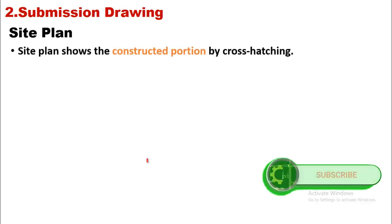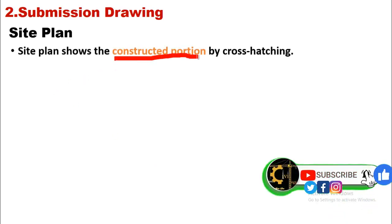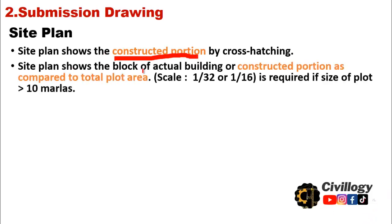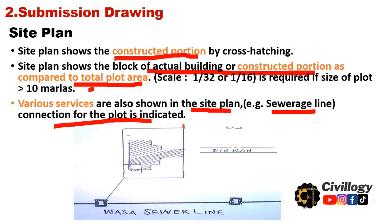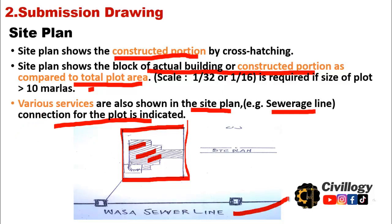Submission drawings also include a site plan and a location plan. The site plan shows the constructed portion of the house or building by cross-hatching — indicating the covered area compared to the total plot area. Various services are also shown in the site plan, such as the sewerage line connection for the plot, showing from where the sewerage connection is to be provided.